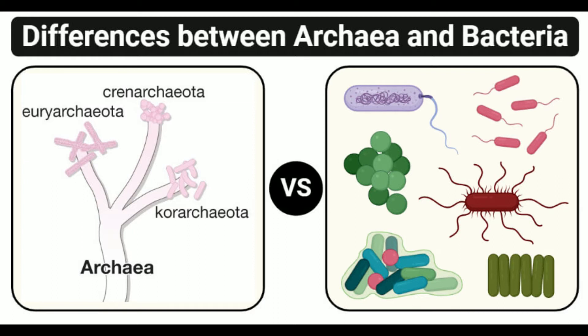Photosynthesis: Archaea do not perform oxygen-generating photosynthesis but are phototrophs — they use sunlight as a source of energy. Many bacteria containing photosynthetic pigments can perform photosynthesis to prepare their own food.